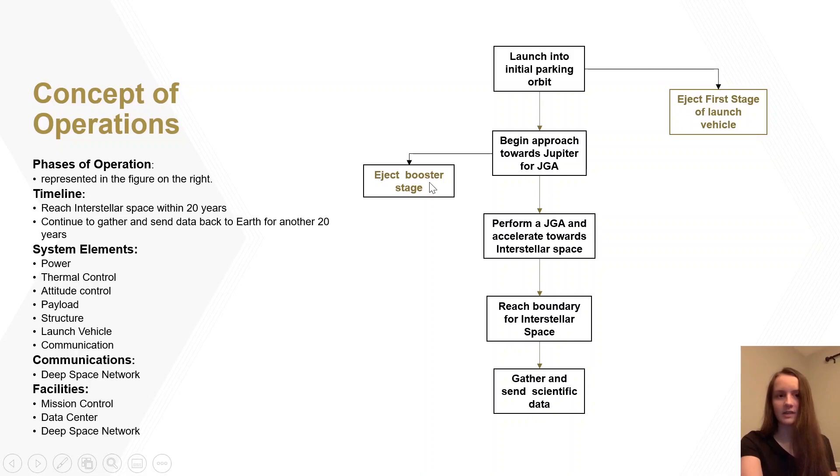A concept of operations has been developed which indicates the mission logistics. The vehicle will consist of various subsystems, such as thermal control, attitude control, and communications, that will ensure that accurate data is sent back to Earth. The system will be launched, perform a Jupiter gravity assist, and send data to Earth for at least 20 years upon crossing the interstellar boundary, which leads us into deeper details regarding functional and performative requirements of the vehicle.